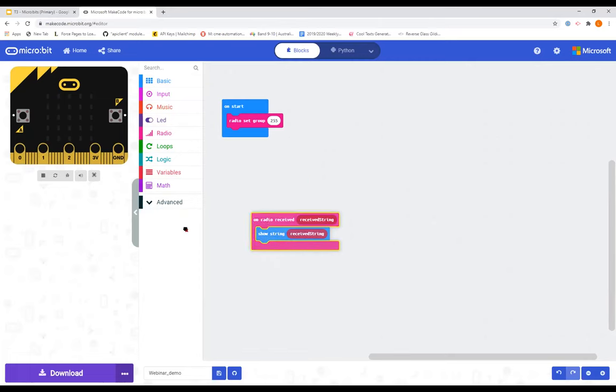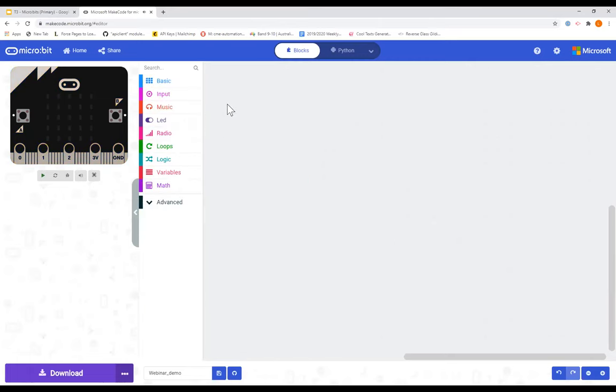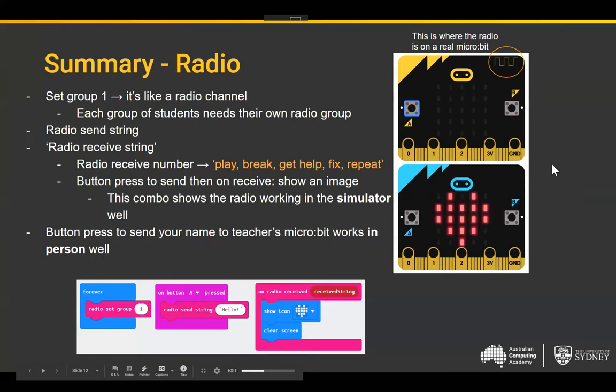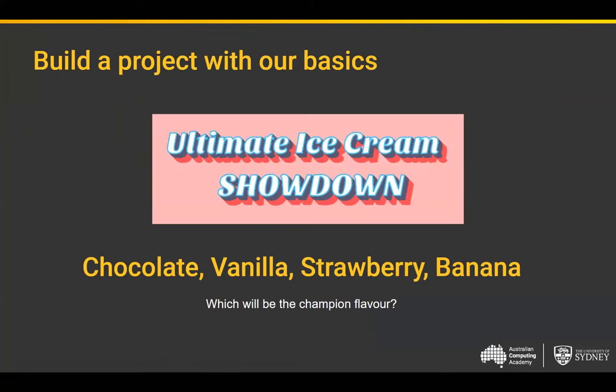A good way to do this in person is to get kids to send their name on their micro:bit. That's all the students need. The teacher's micro:bit uses 'on radio received string, show string' with the received variable — so every time a student sends their name, the teacher's micro:bit scrolls those names over and over.